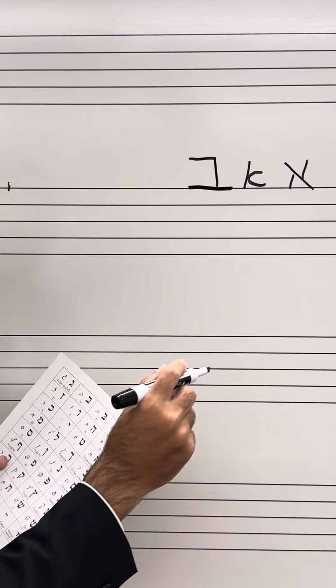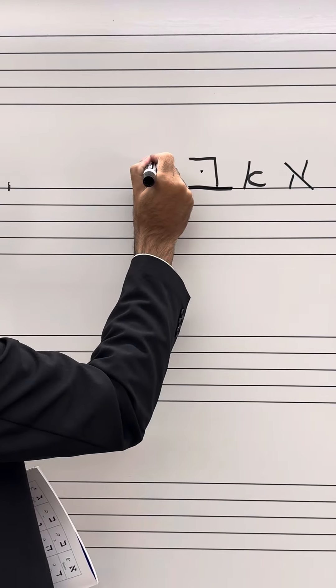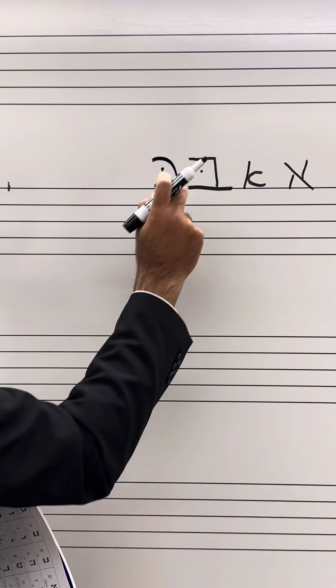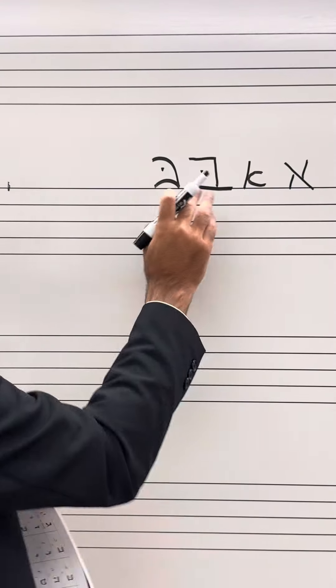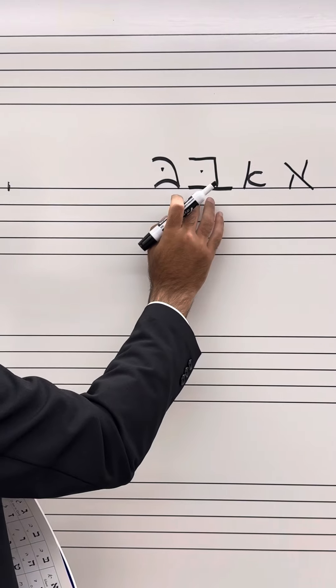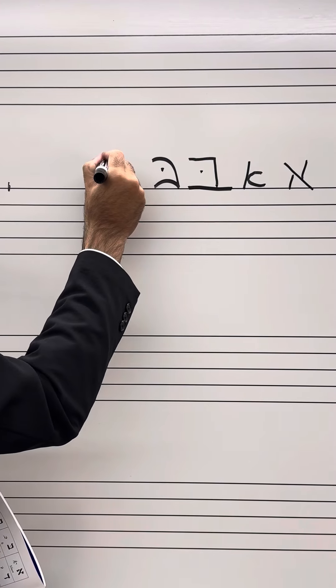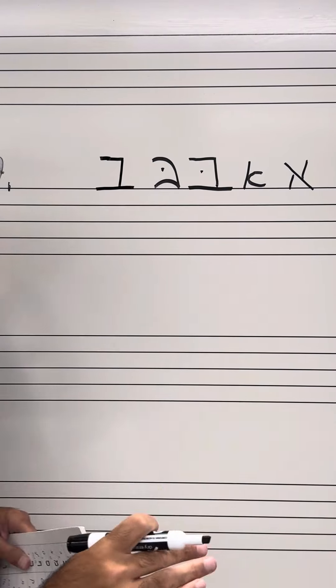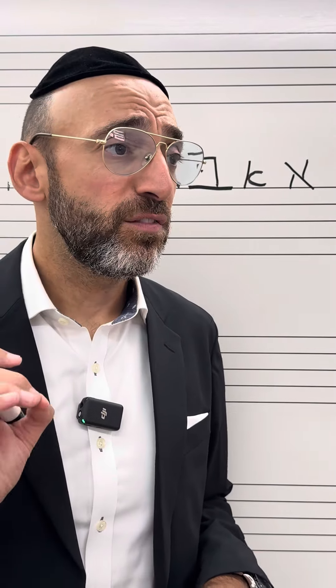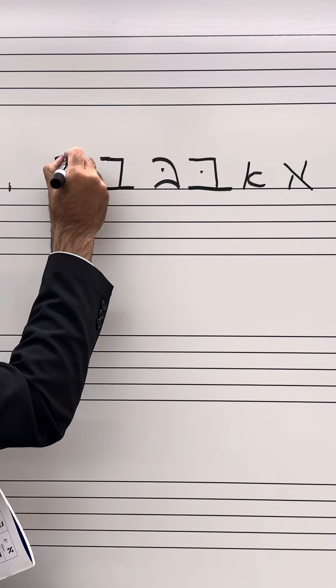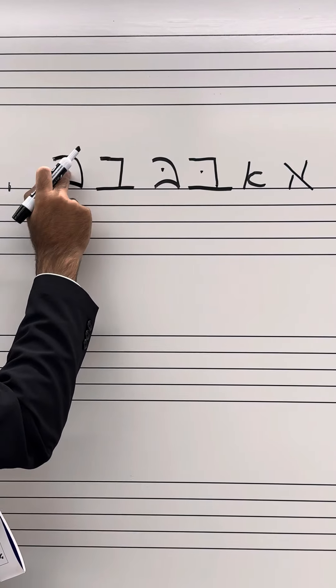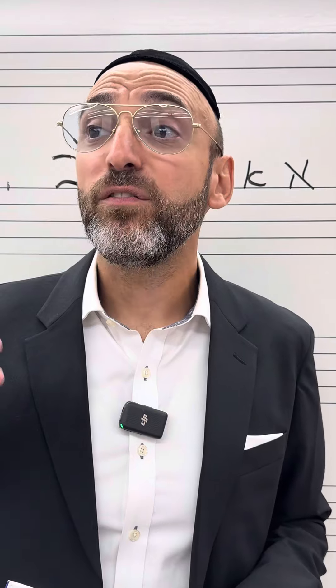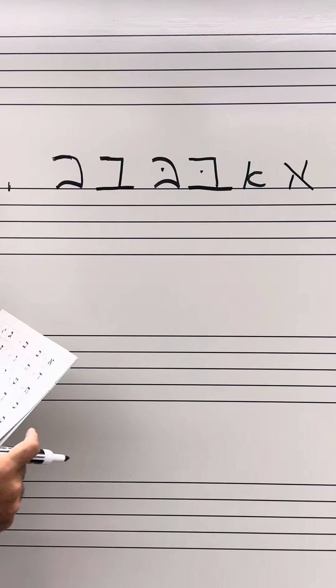Next we have Bet. Bet is the second letter and appears like so in the Torah. In cursive it appears like this. When it has a dot in it — called a Dagesh — it's a B sound, appearing like this in block and like this in cursive. When the dot is missing from inside, it's not a B sound but a V sound. In cursive script it will appear empty as well, and we remember that it's now a V sound.